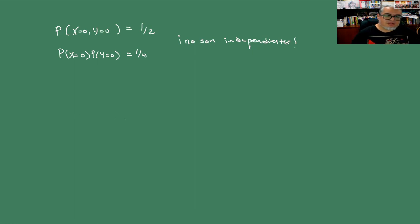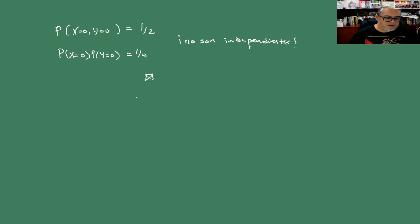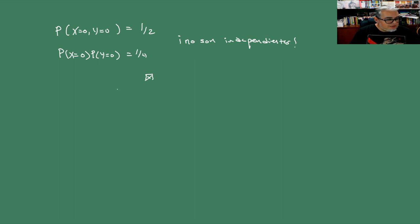Hoy le vamos a dejar aquí. Lo que vamos a ver en la siguiente sesión es lo que se llama el coeficiente de correlación. Nos vemos en la siguiente sesión.